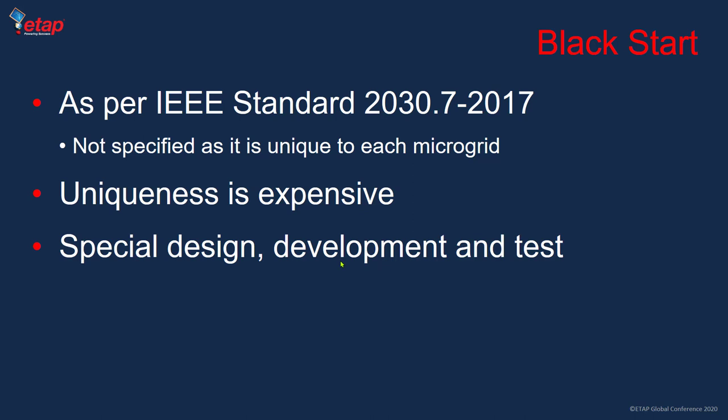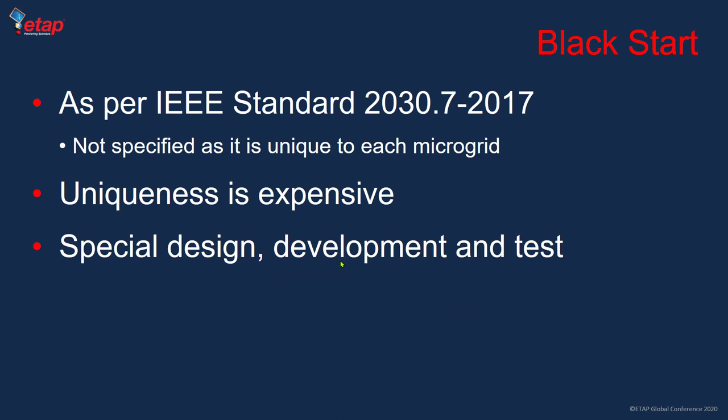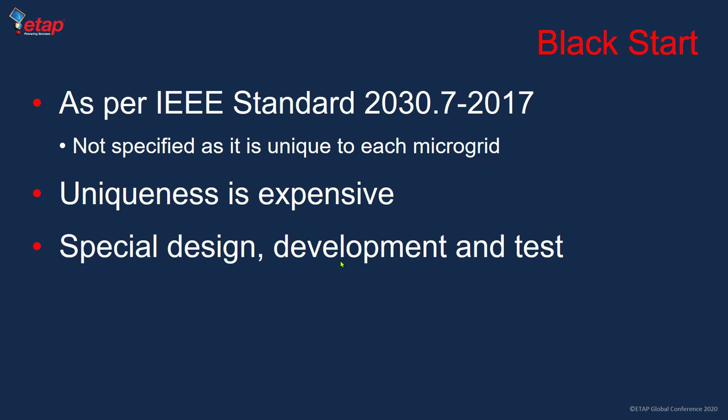Black start is unique to each microgrid and can be expensive in terms of special design, development, and testing. However, if we do a very good job on unplanned islanding — using intelligent dynamic strategies as ETAP provides — we can avoid the black start and eliminate this expensive unique design requirement.